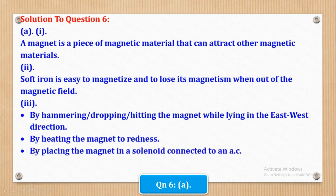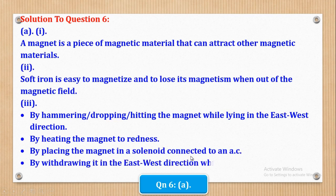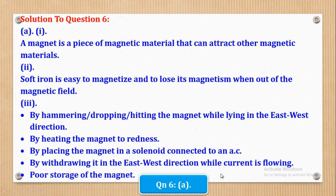So next is by placing the magnet in a solenoid connected to an alternating current. And next is by withdrawing the magnet in the east-west direction while current is flowing. And lastly, poor storage of the magnet can also make it lose its magnetism. So basically that's what they wanted in Roman part A.